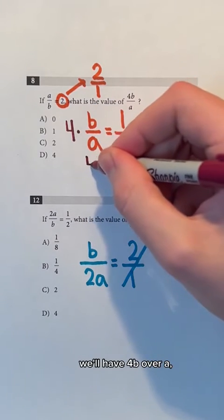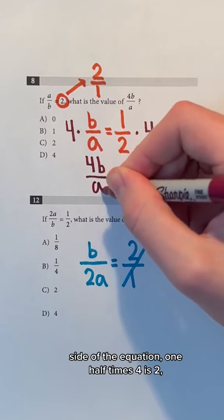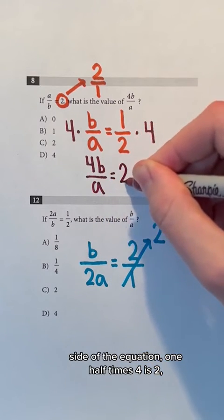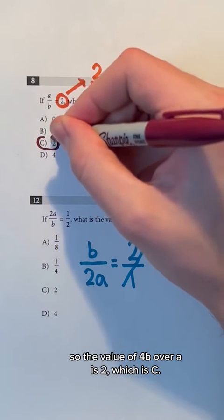On the left side of the equation, we will have 4B over A and on the right side of the equation, 1 half times 4 is 2. So the value of 4B over A is 2 which is C.